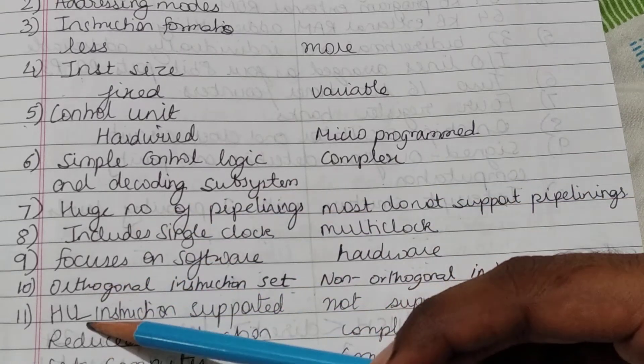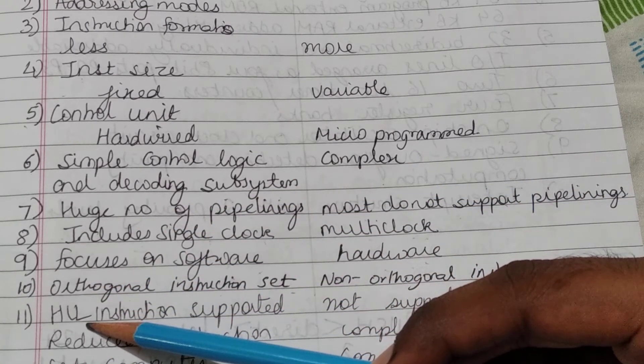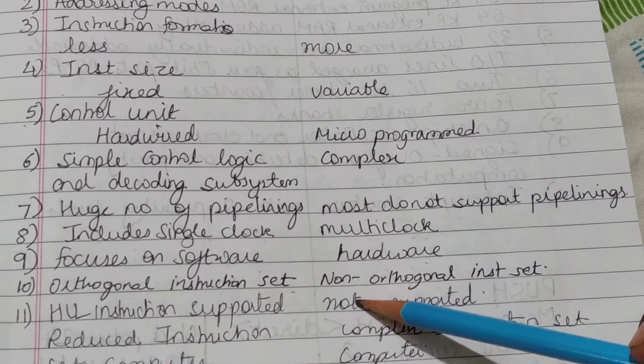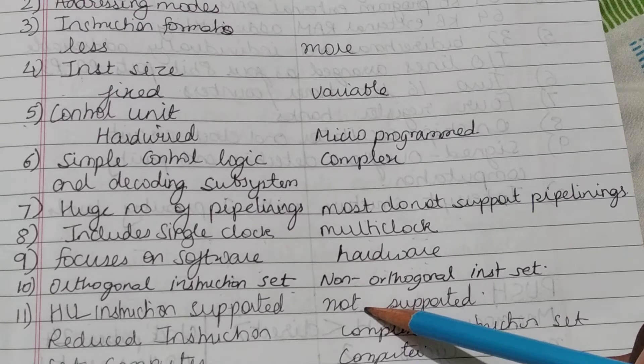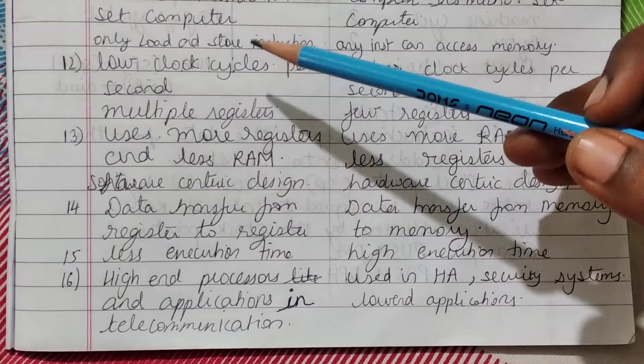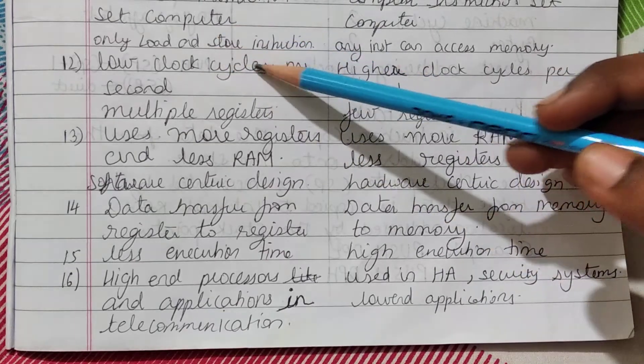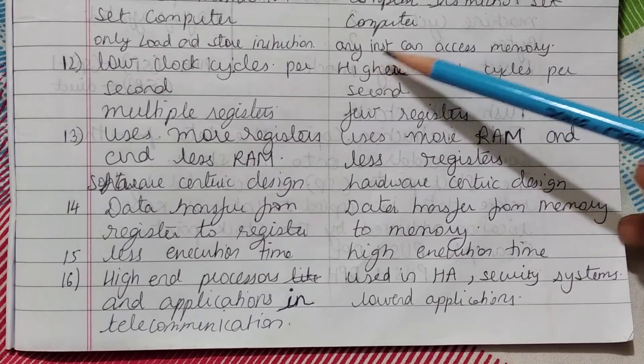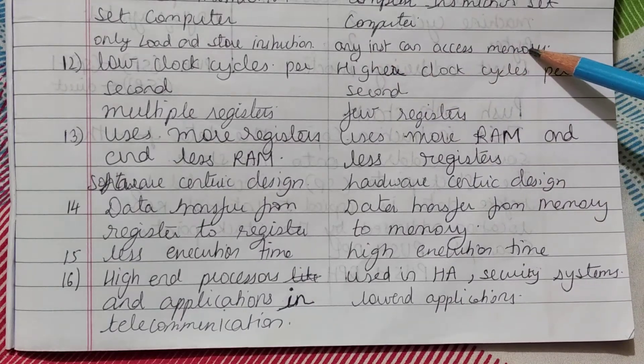HLL, that is High-Level Language instruction, is supported in RISC but not in CISC. In RISC, only load and store instructions access memory, but in CISC any instruction can access memory.